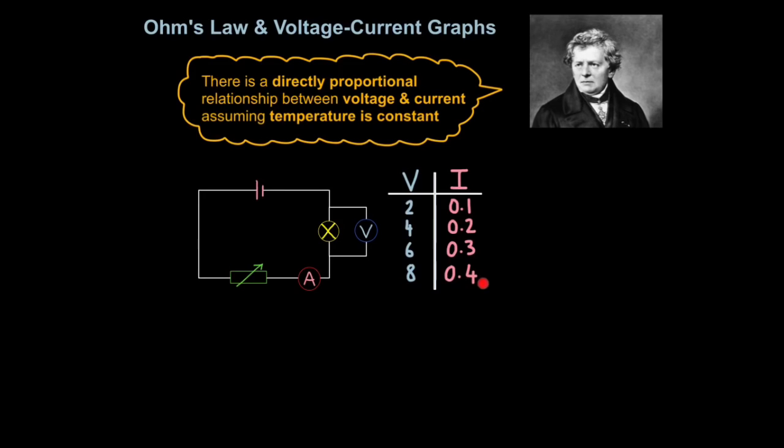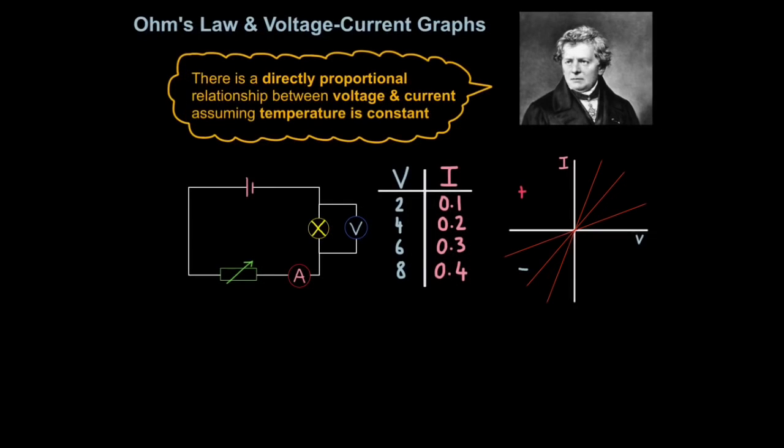Directly proportional relationships are best seen on graphs because they produce diagonally straight lines. So any line which looks like this on a voltage current graph obeys Ohm's law. It doesn't matter whether the line is steep or shallow or somewhere in the middle. All these lines obey Ohm's law. They show a directly proportional relationship.